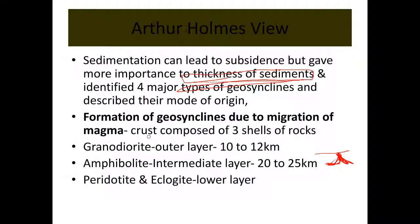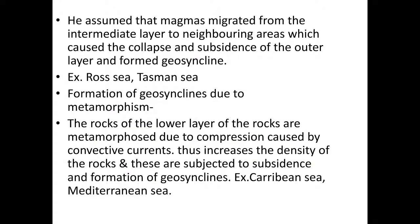The crust is composed of three shells of rocks: the outer layer is granodiorite, about 10–12 kilometers thick; the intermediate layer is amphibolite, about 20–25 kilometers; and the lower layer is peridotite and eclogite. Holmes assumed that magma migrates from the intermediate layer to neighboring areas, which causes collapse and subsidence of the outer layer, forming geosynclines. Example: the Tasman Sea.